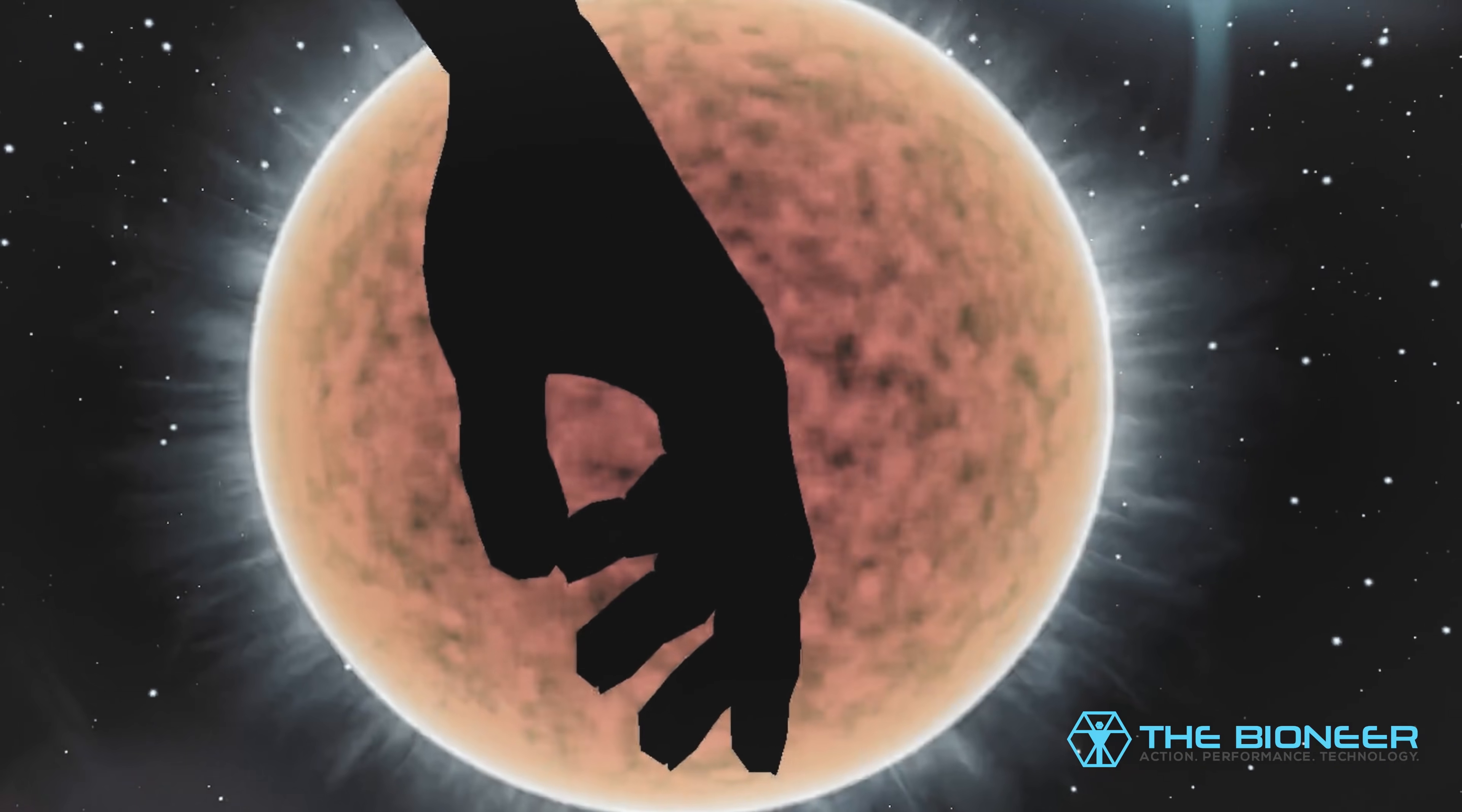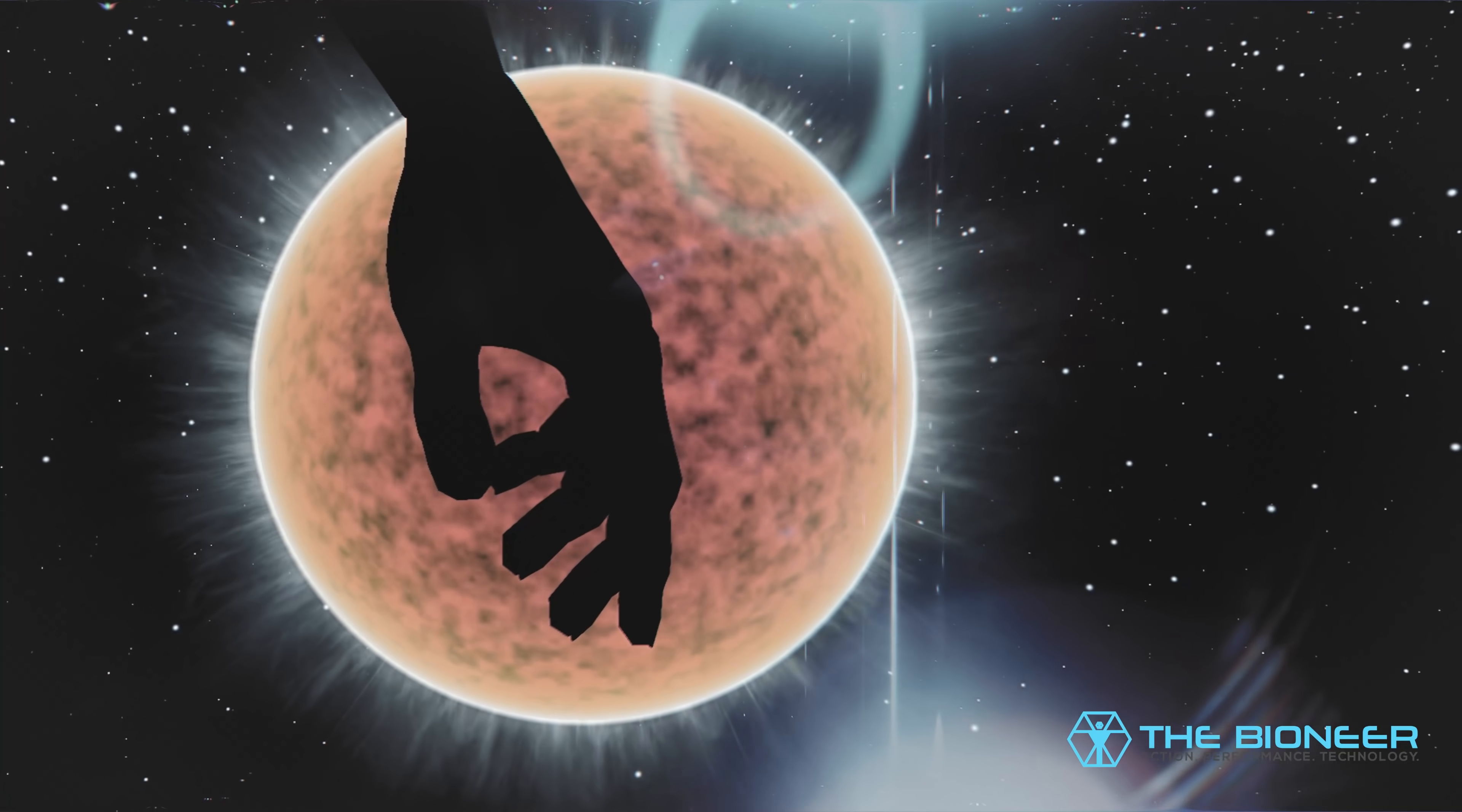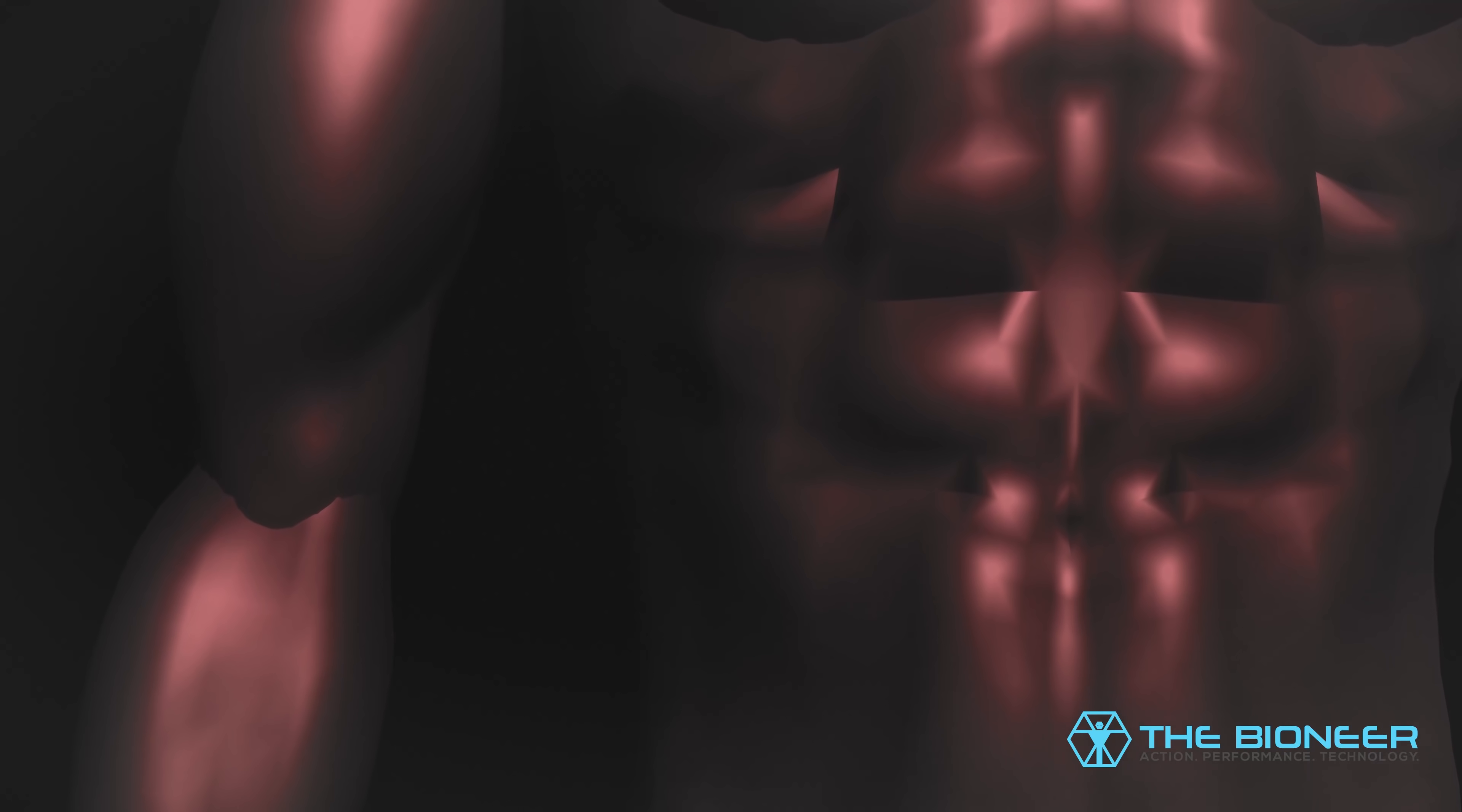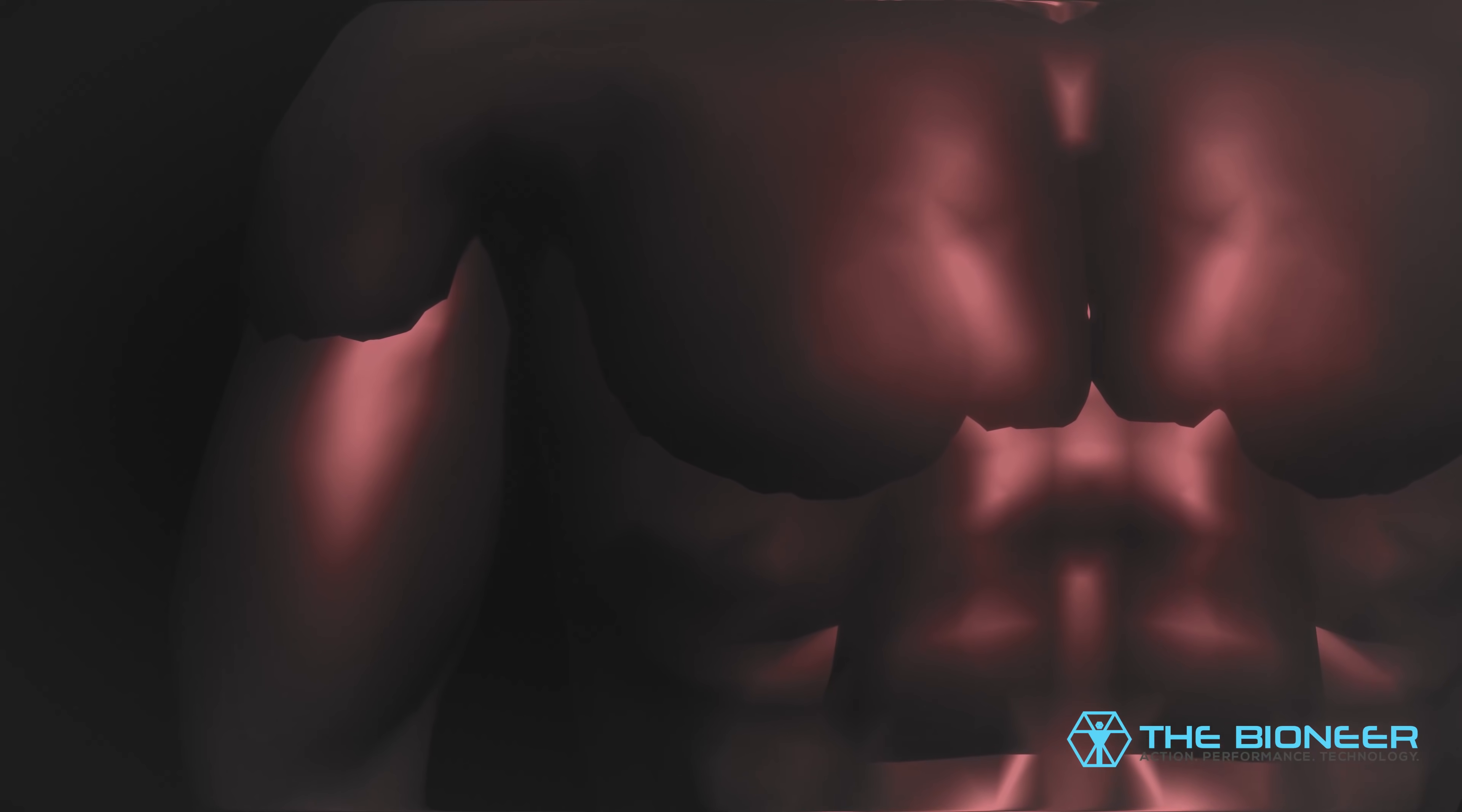Any two people share roughly 99.9% of the same genetic code, but that small 0.1% is enough to account for more than 3 million differences. So different are we that there are muscles that only exist in a portion of the population. 20% of the population lack the triangular abdominal muscles called the pyramidalis, for example.